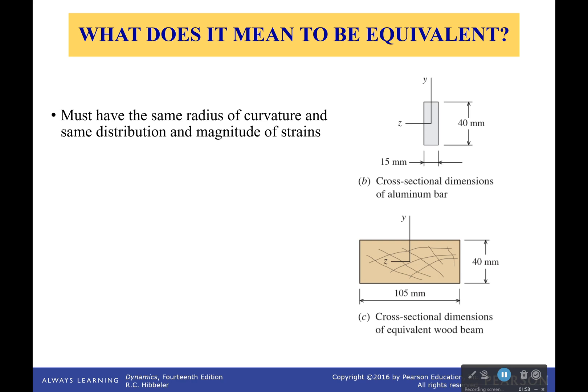So for an equivalent beam to be, for two beams to be equivalent, they have to have the same radius of curvature and the same distribution and magnitude of strains.